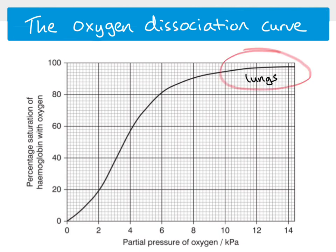Up in this area of the graph, where there is a very high partial pressure of oxygen, this is what it's like in the lungs — which are regularly ventilated with air, so there's a lot of oxygen present. At these very high partial pressures, we see a very high saturation of hemoglobin: 98% of the hemoglobin is bound to oxygen, indicating a very high affinity.